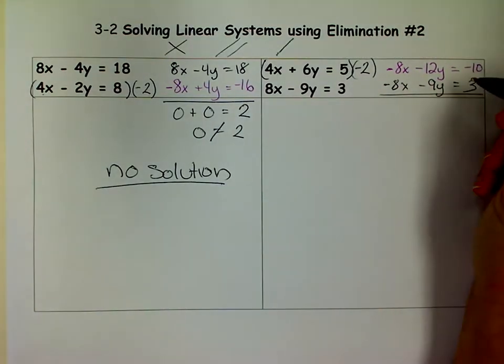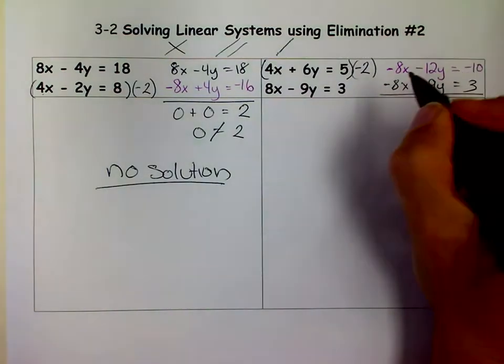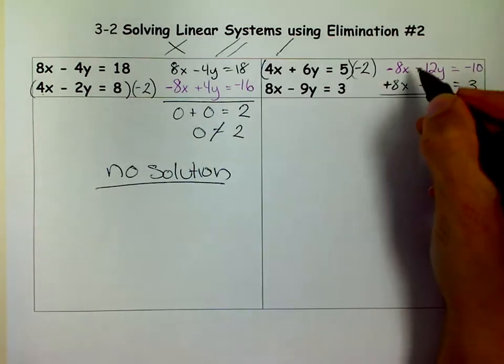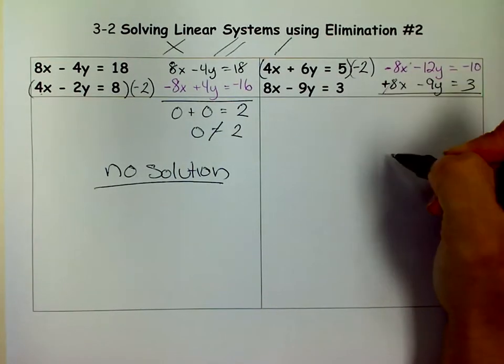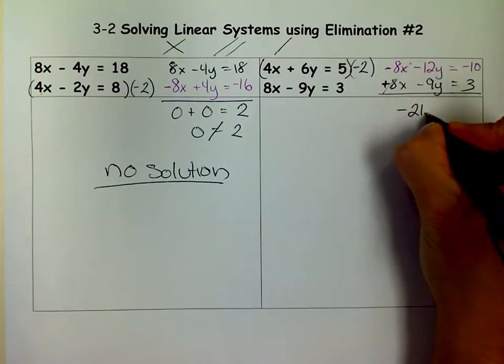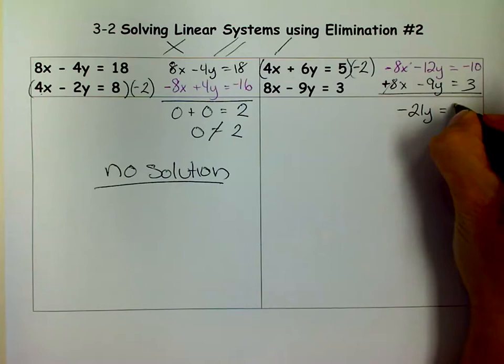And I get negative 8x minus 12y equals negative 10. And over here, I get a negative 8x, sorry, plus 8x minus 9y equals 3. That one didn't change. So now when I add these, these will cancel out. And I get negative 21y equals negative 7.